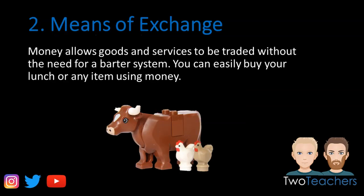Means of exchange: before money you would have had to barter to acquire assets. For example, if I raise chickens and needed a cow, I'd exchange chickens for a cow — straightforward enough. However, if the cow owner didn't want chickens, I'd have to trade for something they did want first, which gets complicated. Money solves this — you can simply exchange money for any item you need, like buying your lunch.